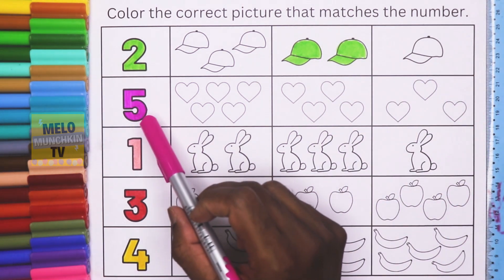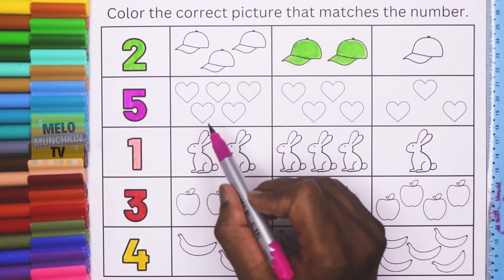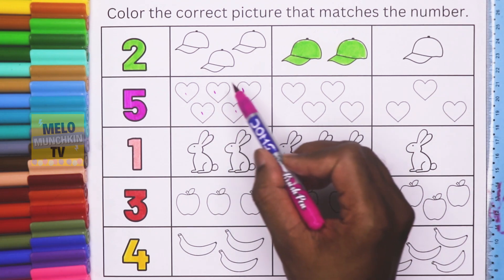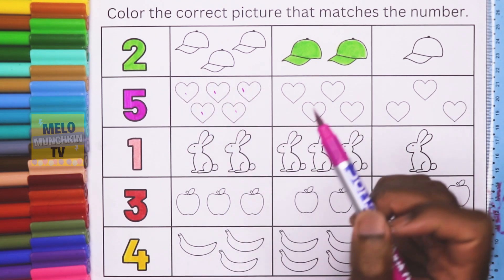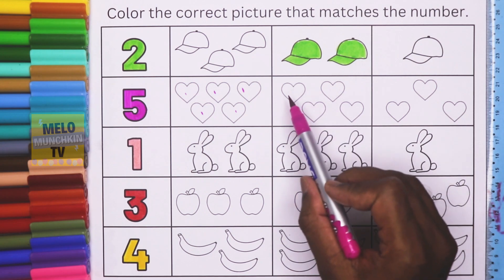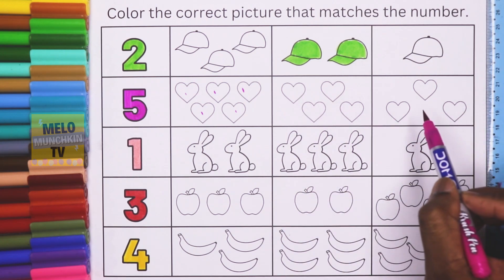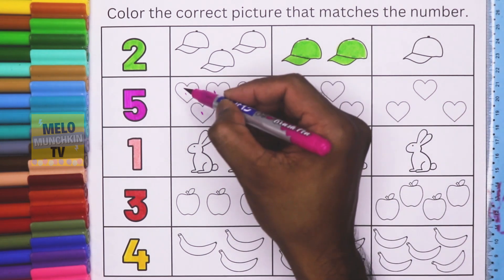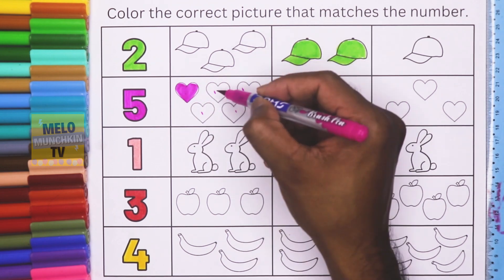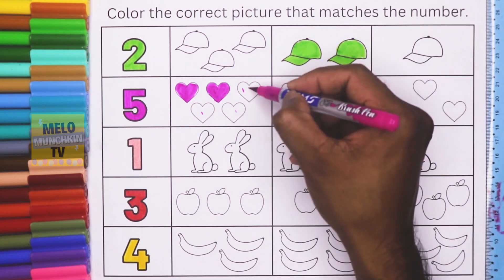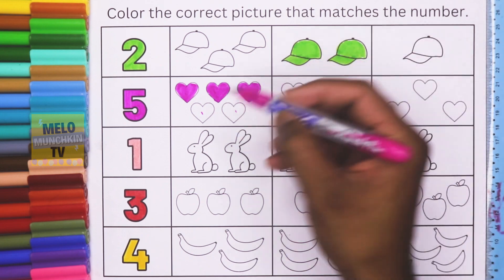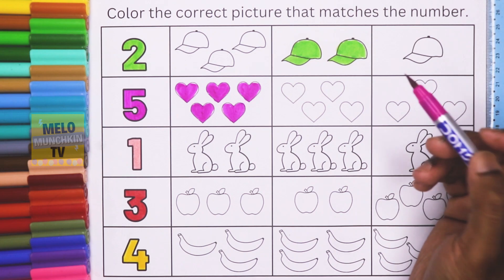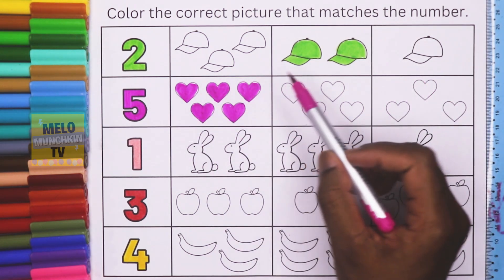Next is number 5. I need to find 5 hearts. Let's count: 1, 2, 3, 4, 5 — so in this box there are 5 hearts. In another box there are 4 hearts, and in the last box there are only 3. So the first is the correct answer. Let's color it: 1, 2, 3, 4, and 5. This is the correct box.